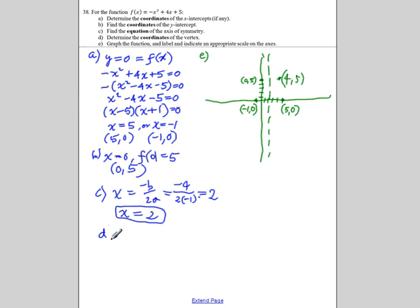Part D: The vertex is on the axis of symmetry, so we know its x value must be 2, and we need to find the y value. In other words, we are looking for f of 2. Plugging 2 into the given function, we have minus 2 squared plus 4 times 2 plus 5. We should get 9. So the vertex is the point (2, 9), and we are going to graph it right now.